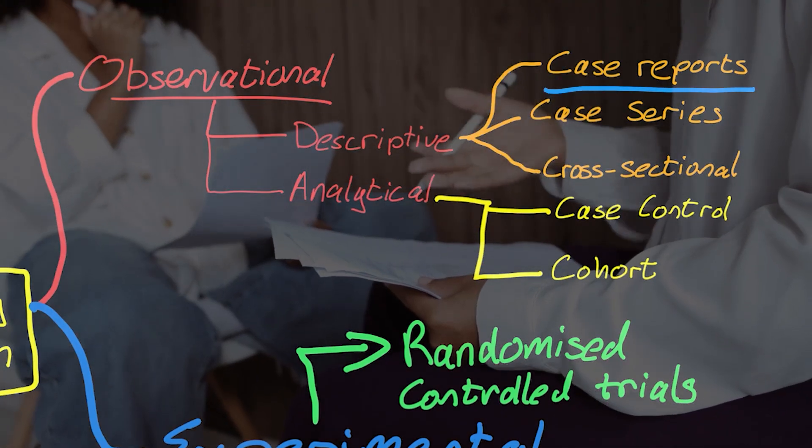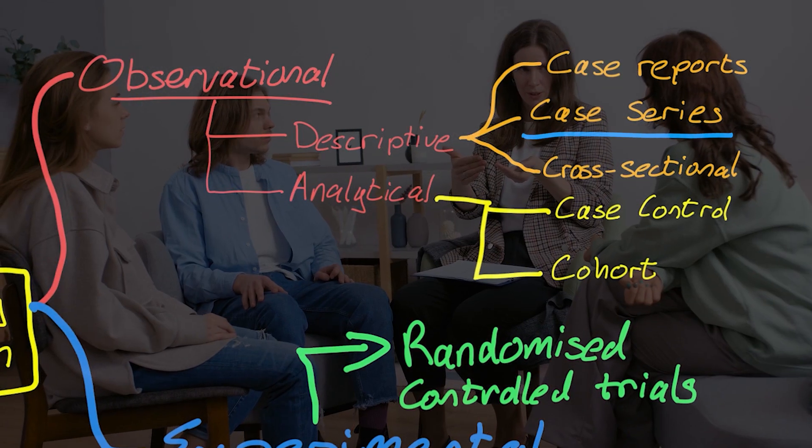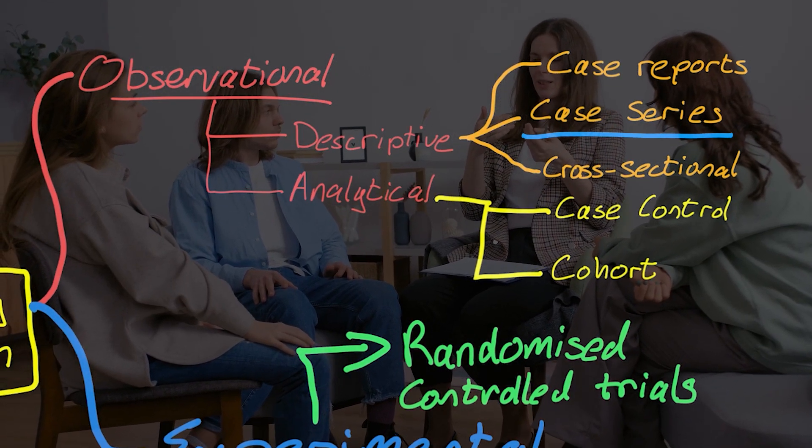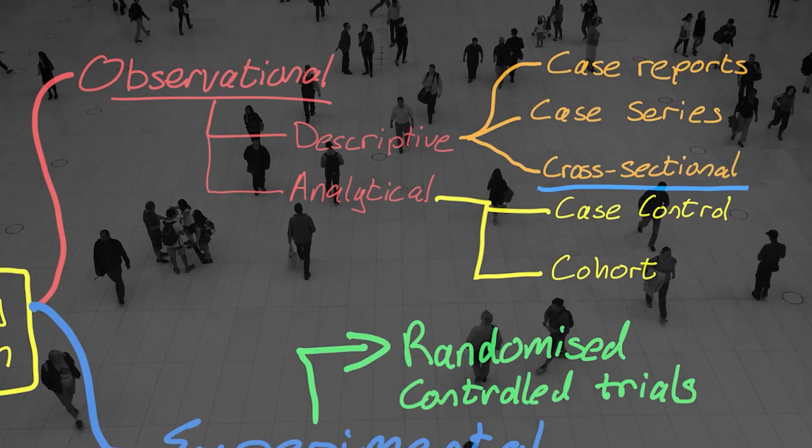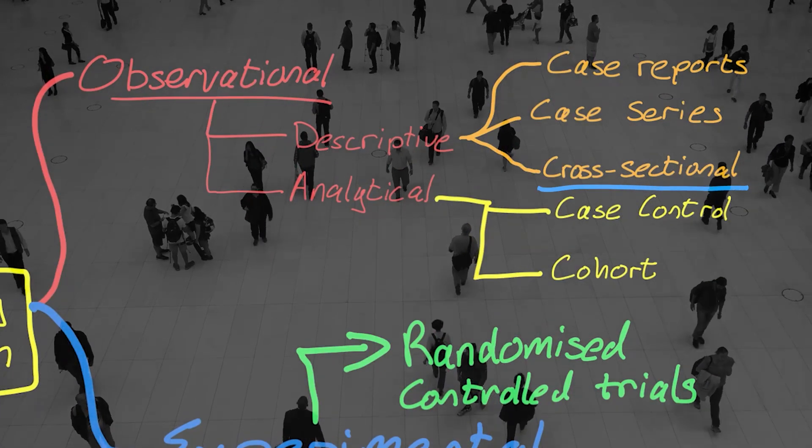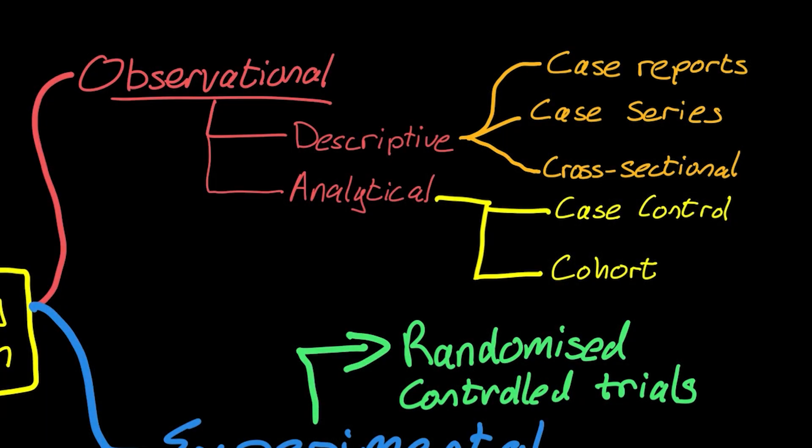Could be a case report. A single case will tell us something. A series of cases tells us a bit more. And then a cross-sectional survey, a cross-sectional study takes, at a point in time, a snapshot of society, and we collect information about either exposures, outcomes, or both. We can do serial cross-sectional studies at different points in time, at which point we now start moving towards an analysis. Let's move on to analytical studies now.